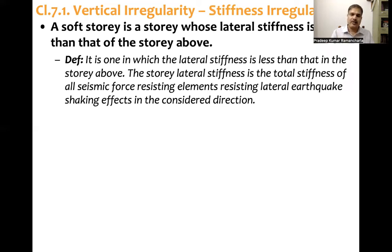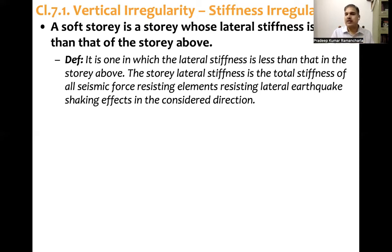As per the detailed definition, a soft story is one in which the lateral stiffness is less than the story above. The story lateral stiffness is the total stiffness of all seismic force-resisting elements resisting lateral earthquake shaking effects in the considered direction. Taking either the x or y direction, you compute the lateral stiffness of all framing elements — beams and columns — combine them to get the story stiffness, and check if any story stiffness is less than the story above. If so, it is considered a soft story.